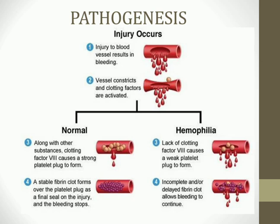In pathogenesis: whenever a blood vessel is injured, it constricts and activates clotting factors. In healthy adults, Factor 8 along with other substances causes a strong platelet plug to form, which combines with fibrin to seal the injury. In hemophiliac patients, lack of Factor 8 causes only a weak platelet plug, so the fibrin clot is incomplete or delayed, allowing bleeding to continue.